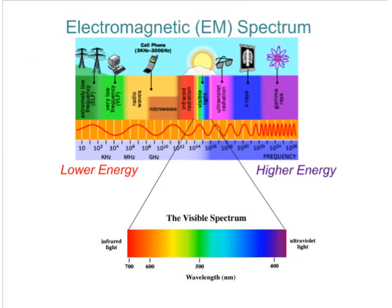We are going to step back and look for a moment at electromagnetic radiation and the electromagnetic spectrum. You've probably seen this before — it's just a little review. Electromagnetic radiation can come from a variety of sources, anything from radio waves to microwaves, cell phones. We have gamma rays — very high energy electromagnetic radiation — and x-rays. We also have infrared radiation, visible light, and ultraviolet radiation, often referred to as IR and UV.